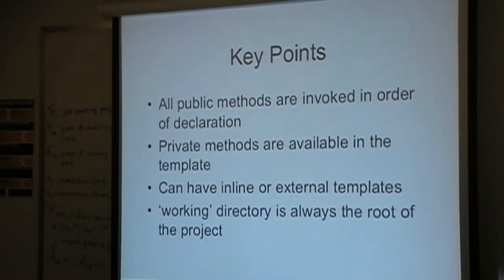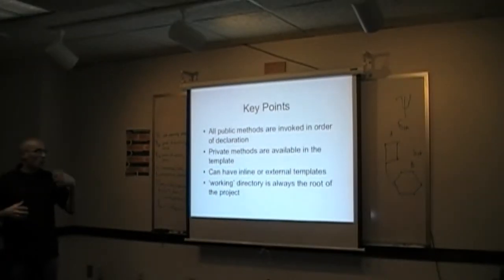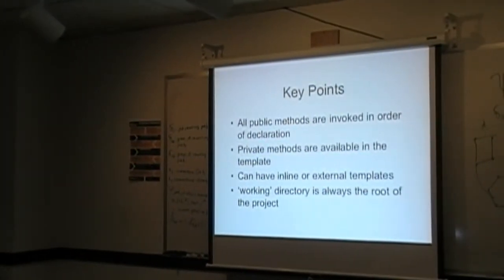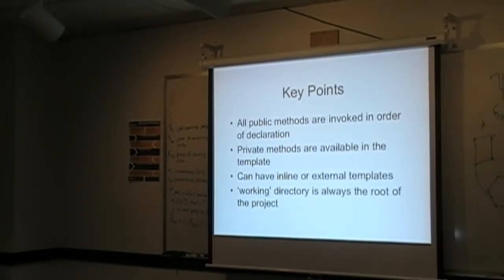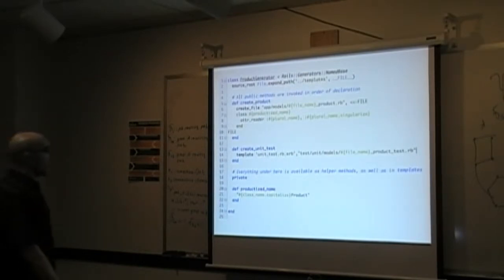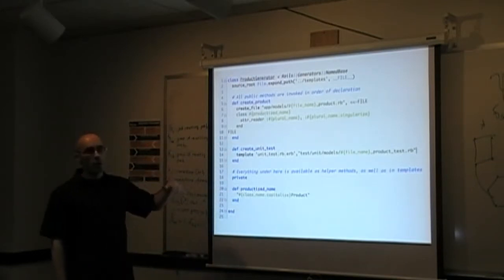The key points with all Rails generators in Rails 3: all public methods are invoked in top-down order of declaration. Private methods are available in templates. You can have inline or external templates. The working directory is always the root of the project. When you create your own generator, every public method that's public will be called. It's just an organization technique — you could have one giant method or break it down into smaller methods; it's totally up to you.